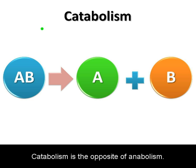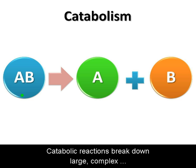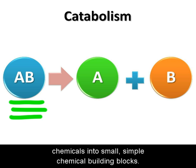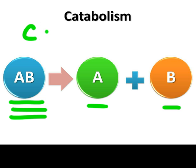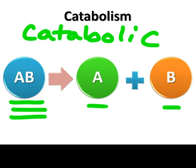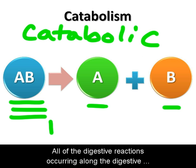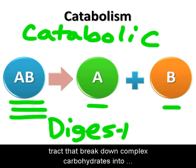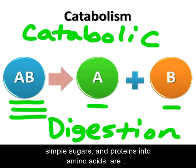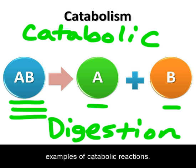Catabolism is the opposite of anabolism. Catabolic reactions break down large, complex chemicals into small, simple chemical building blocks. All of the digestive reactions occurring along the digestive tract that break down complex carbohydrates into simple sugars and proteins into amino acids are examples of catabolic reactions.